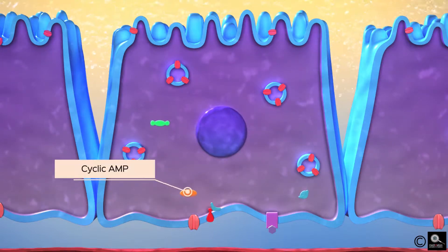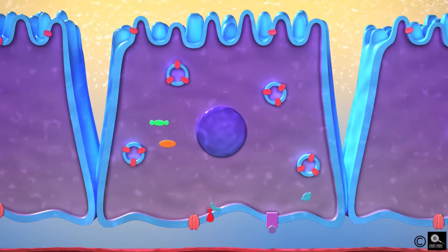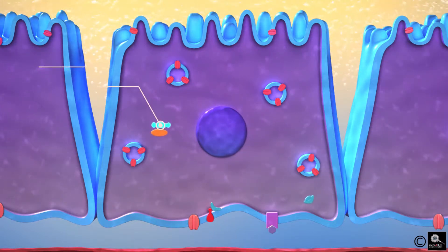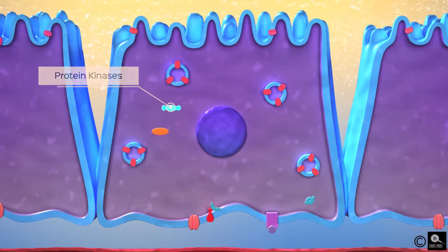Once it binds to the V2 receptors, it increases the formation of cyclic AMP in these cells. This activates protein kinases.